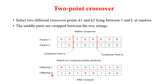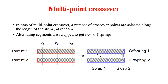Offspring 2 has its first part from parent 2, the middle part from parent 1, and the last part from parent 2. In multi-point crossover, many crossover points are required and alternating segments are swapped to get new offspring.